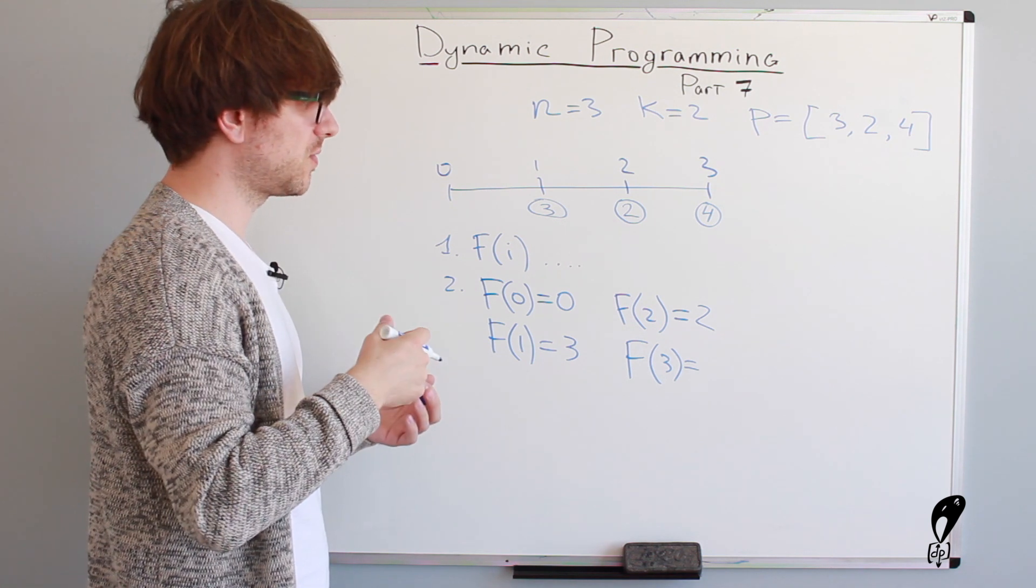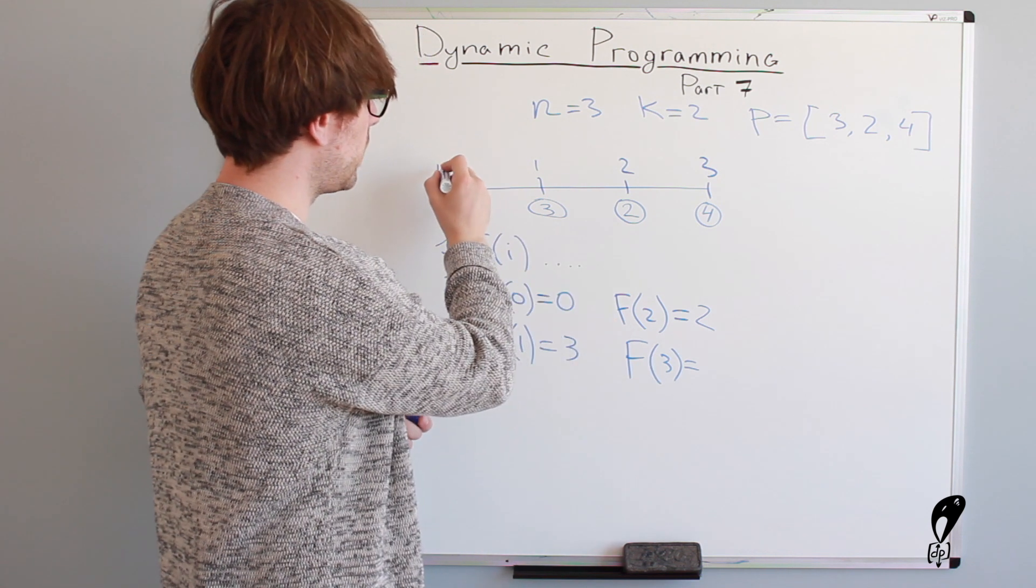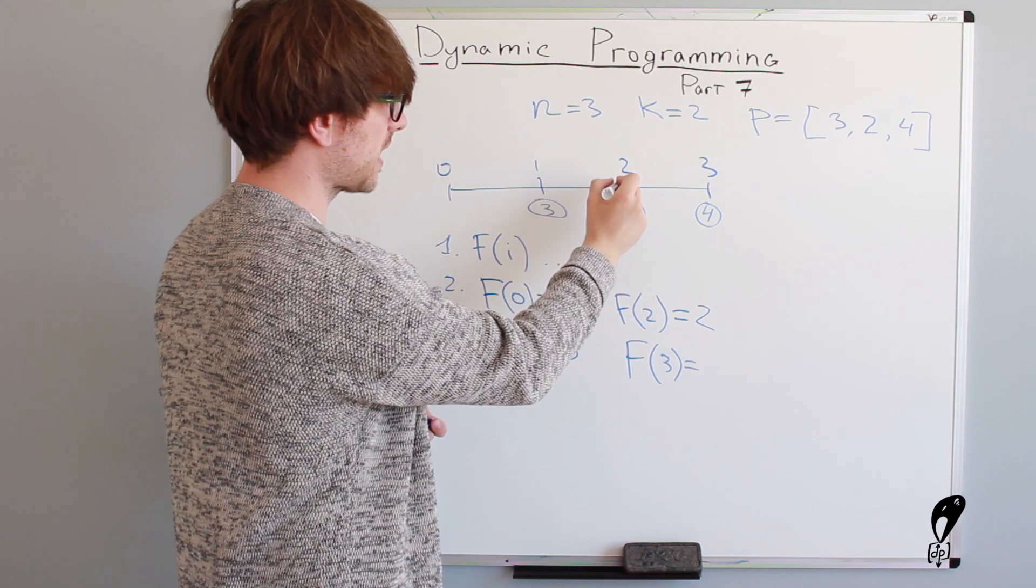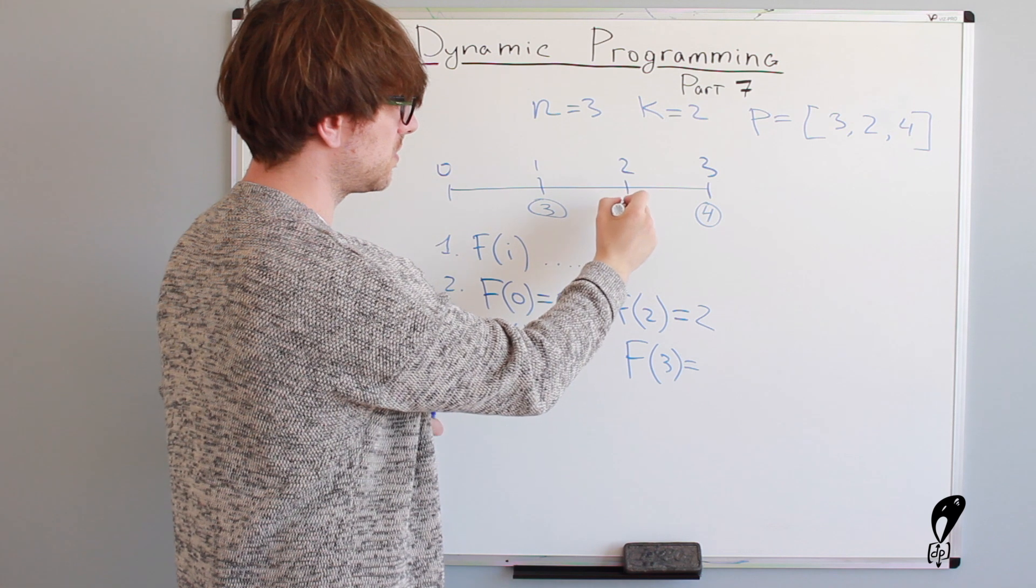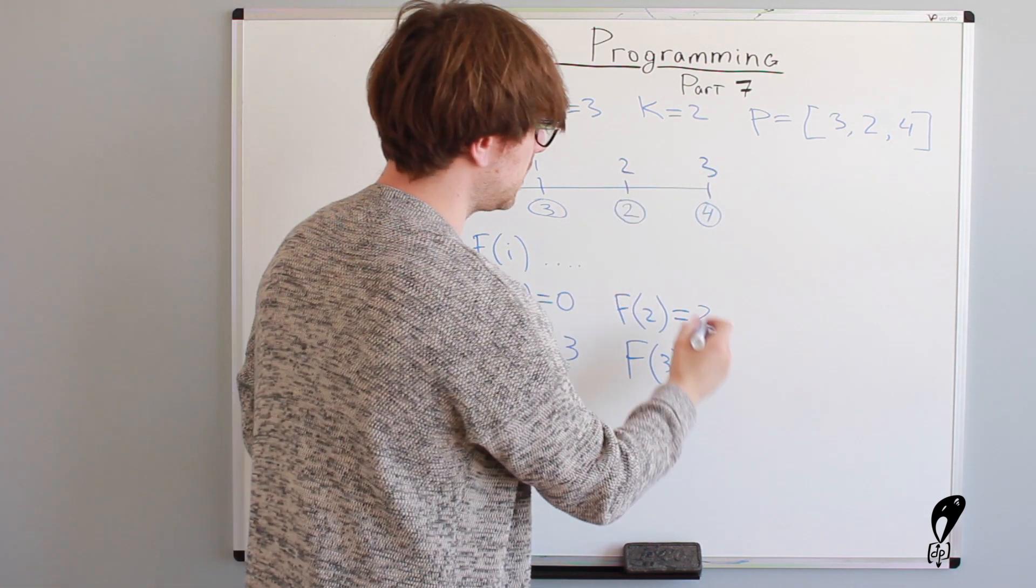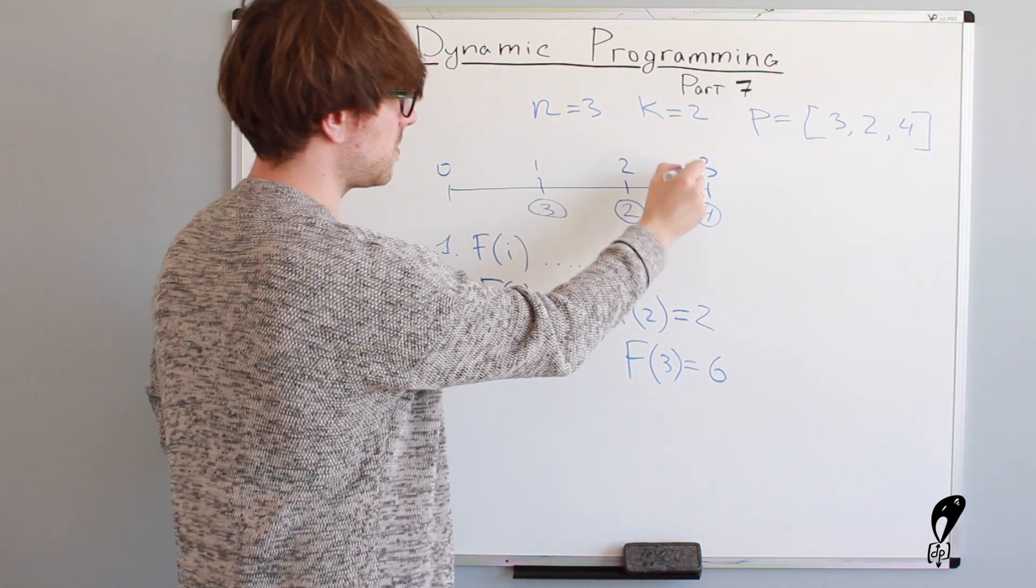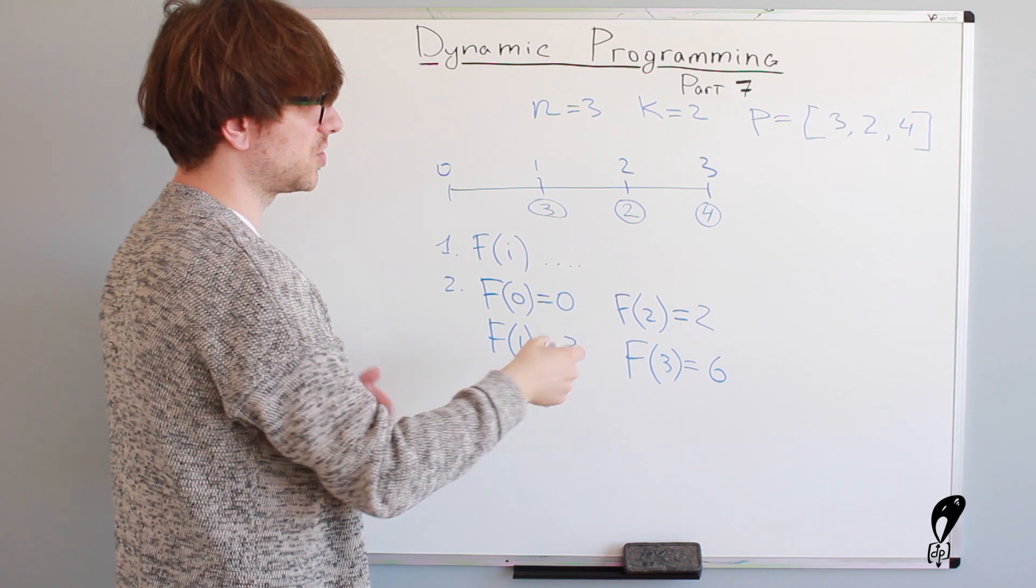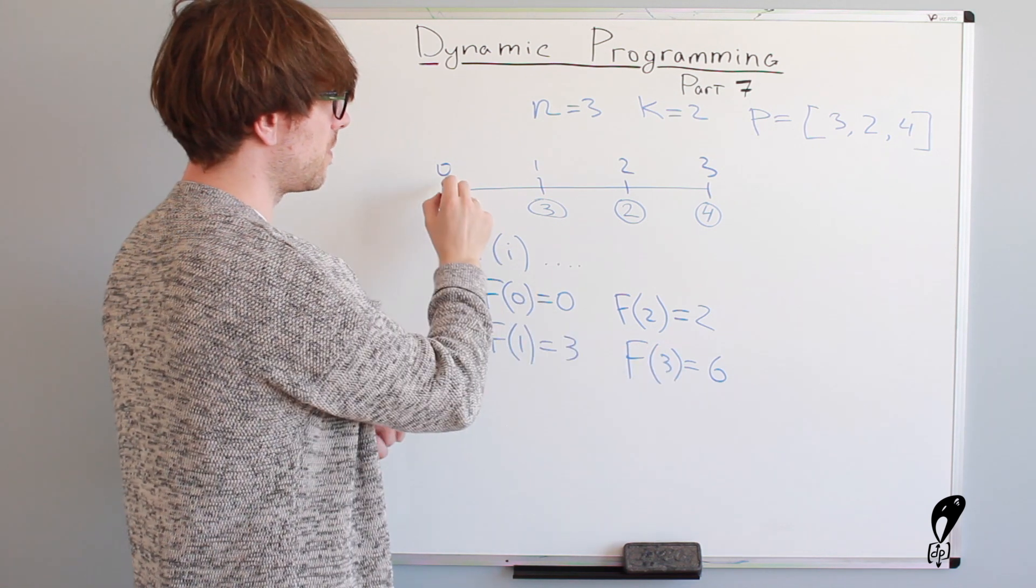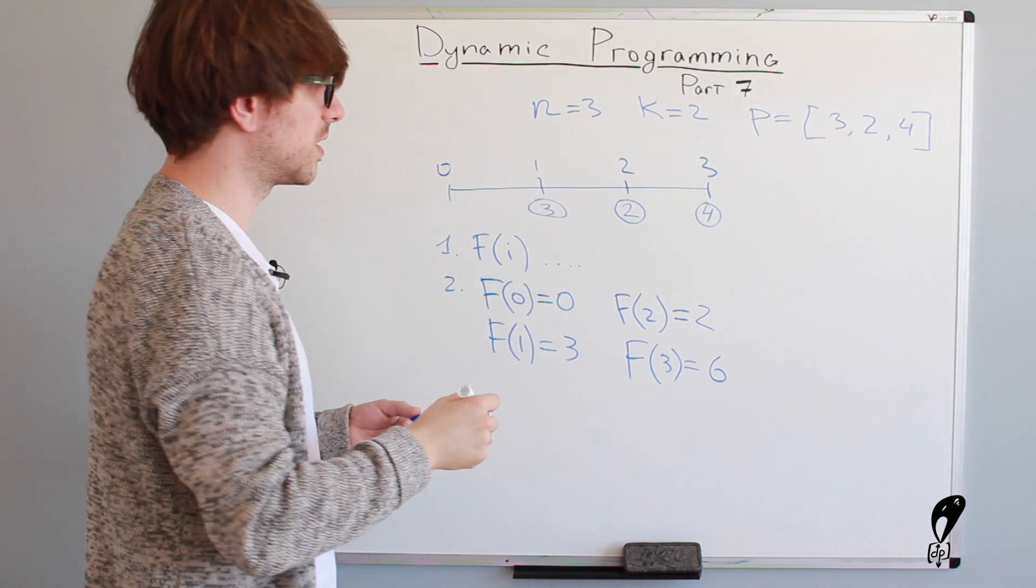And maybe you will also be able to devise the transition function. So f of three, we can jump from the ground to the second step, it would cost two dollars. And then from the second step straight to the third, to the last one, it would be six dollars in total. If we would go to the first step and then to the third, it would be seven, which is greater than six. If we would go to the first, to the second and to the third, it's obviously even more expensive.